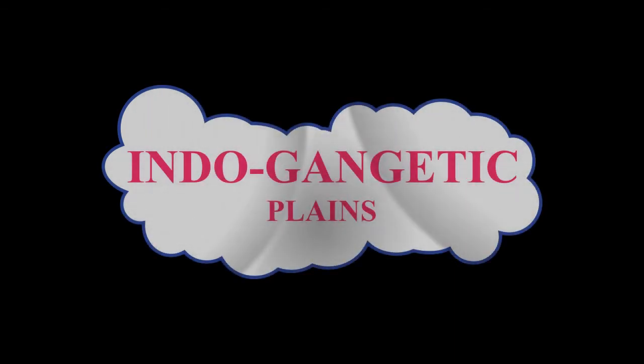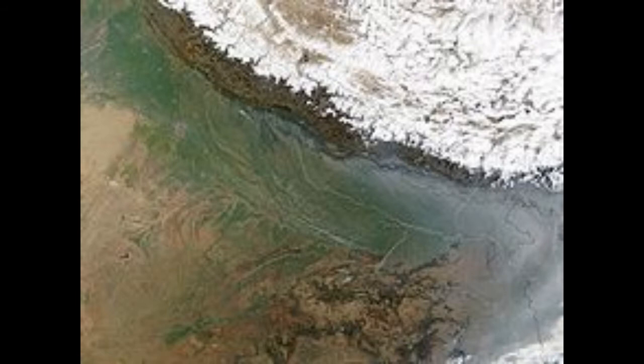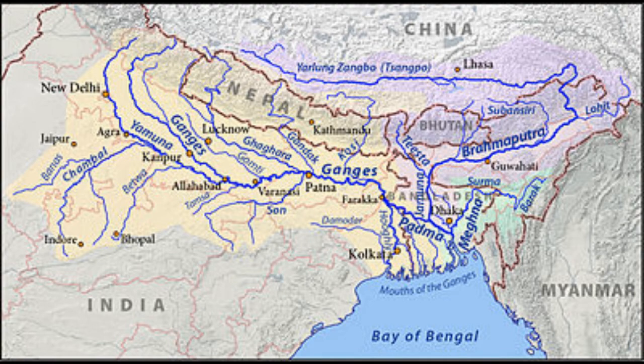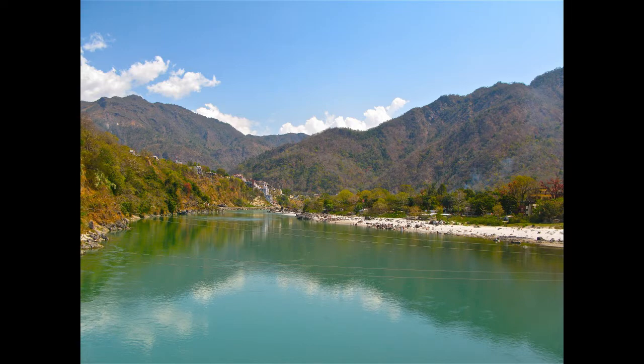Hello students, today I came with a new topic: Indo-Gangetic Plains. If you break this word, it tells you the entire story. Indo refers to Indus, Gangetic refers to Ganga Plains. We can also add a third one not mentioned in the name — that is the Brahmaputra Plain. Whenever it is said Indo-Gangetic Plains, you need to keep three things in mind: Indus, Ganga, and Brahmaputra Plains.